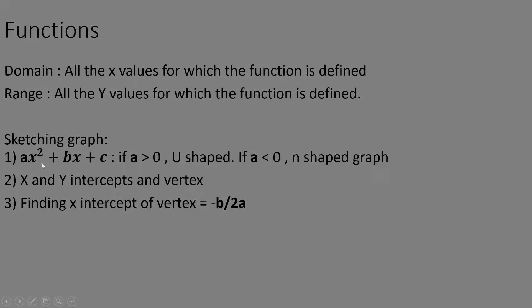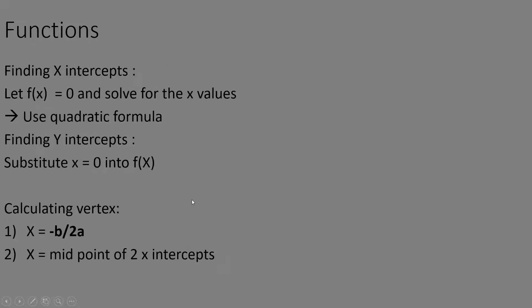For sketching a quadratic graph, you're given ax squared plus bx plus c. If the coefficient of x squared, which is a, is greater than zero, it'll be a U-shaped graph — think of a smile. If a is less than zero, you get an N-shaped graph. You also need to find the x and y intercepts and the vertex. The x coordinate of the vertex is found using negative b over 2a.